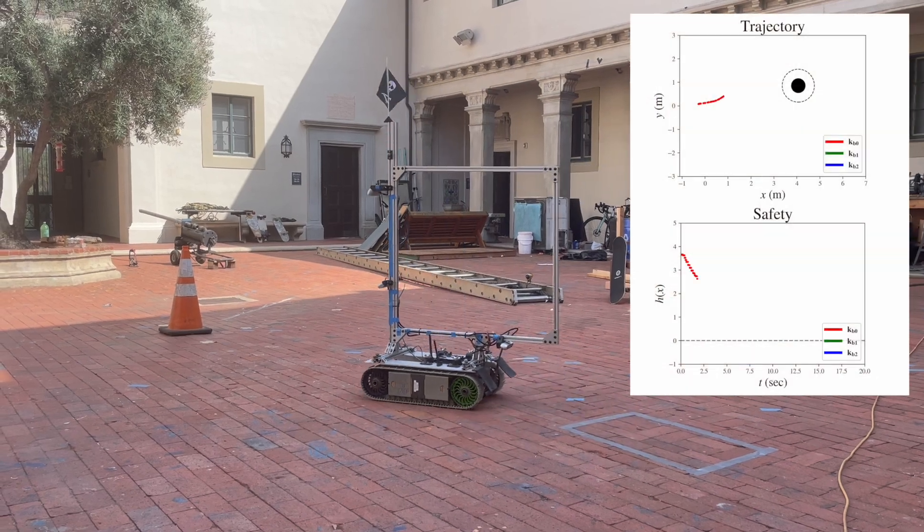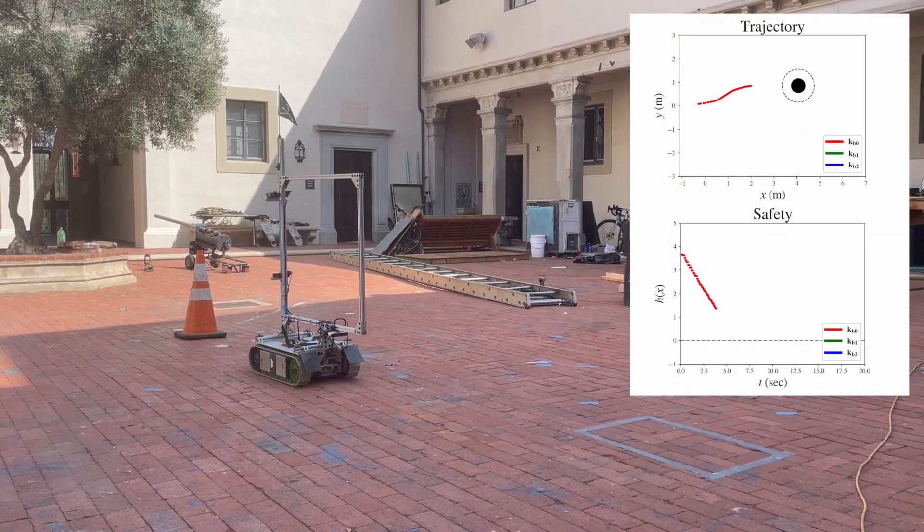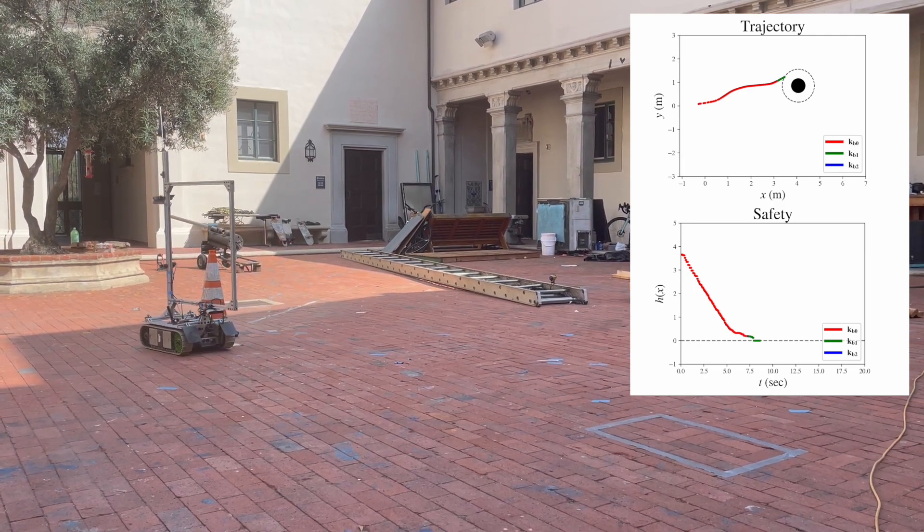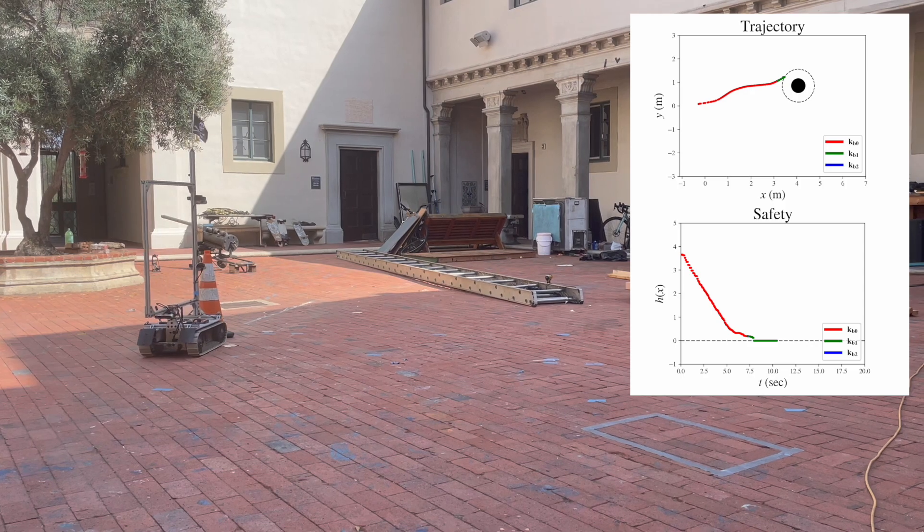Next, we present an example in which KB0 and KB1 are used. Notice that the robot switches to KB1 using our learnable switching law when the driver tries to face the obstacle.